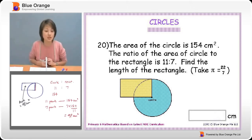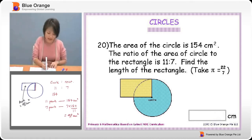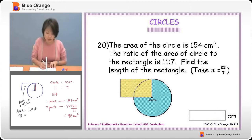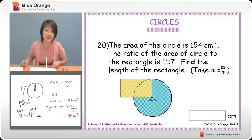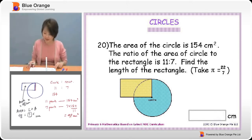Since the question asks for the length of the rectangle, we use: area equals length times breadth. The area is 98. We need to find the breadth, which — as mentioned — is this line here that happens to be the radius of the circle. So we will need to find the radius of the circle.